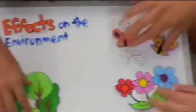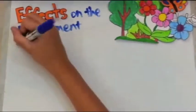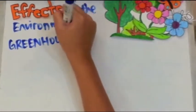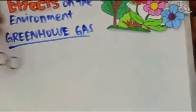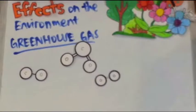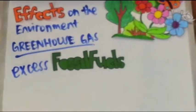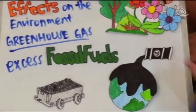Now we will talk about the effects of carbon monoxide on the environment. Carbon monoxide is a greenhouse gas just like carbon dioxide and oxygen. It is due to the use of excess fossil fuels such as coals and tar.